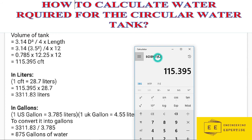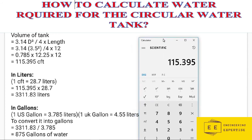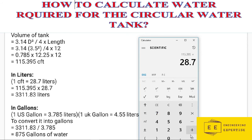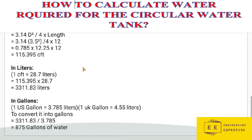We already have the volume, so just multiply it with 28.7, which means for one cubic foot we can store 28.7 liters of water. We multiply the total volume by 28.7 — this is the thumb rule. The result is 3311.83 liters of water required to fill this water tank.